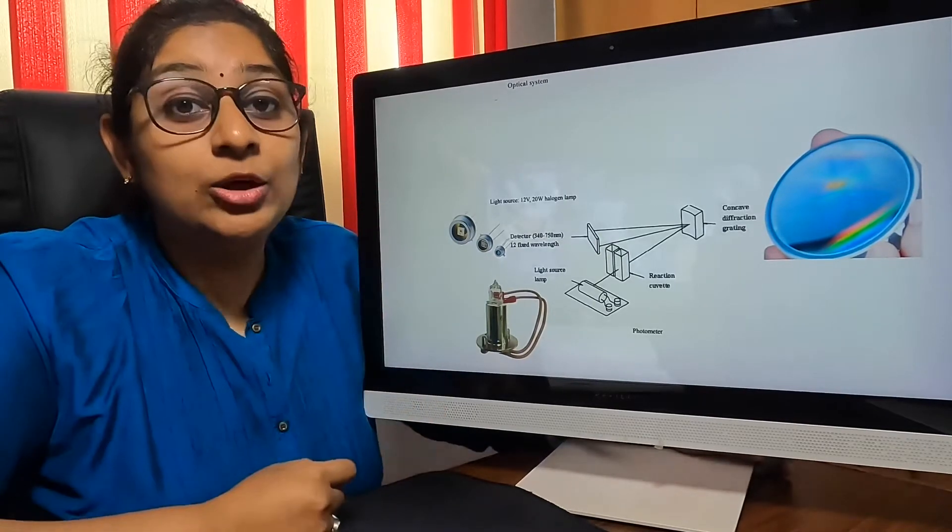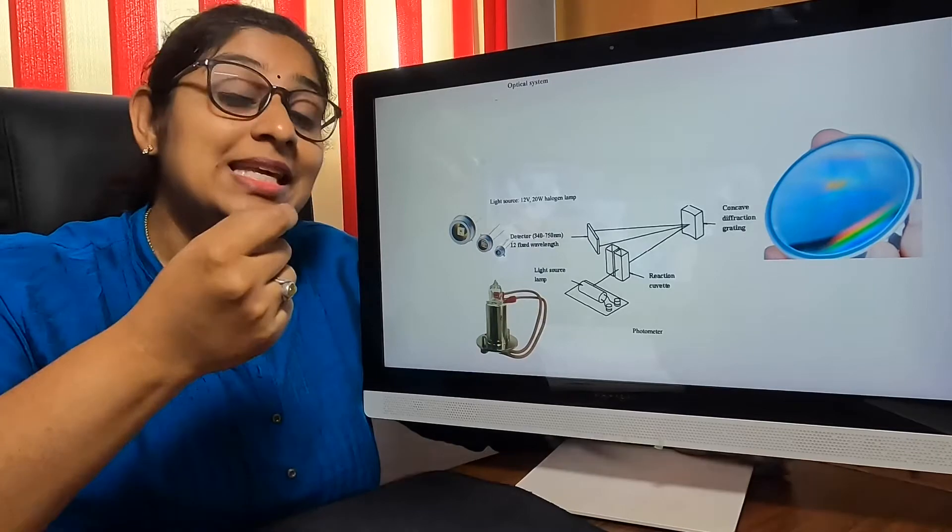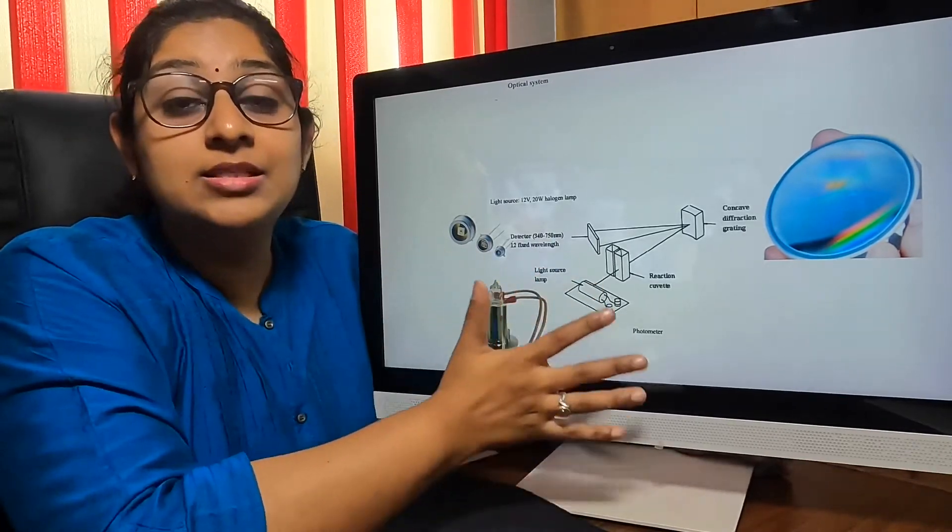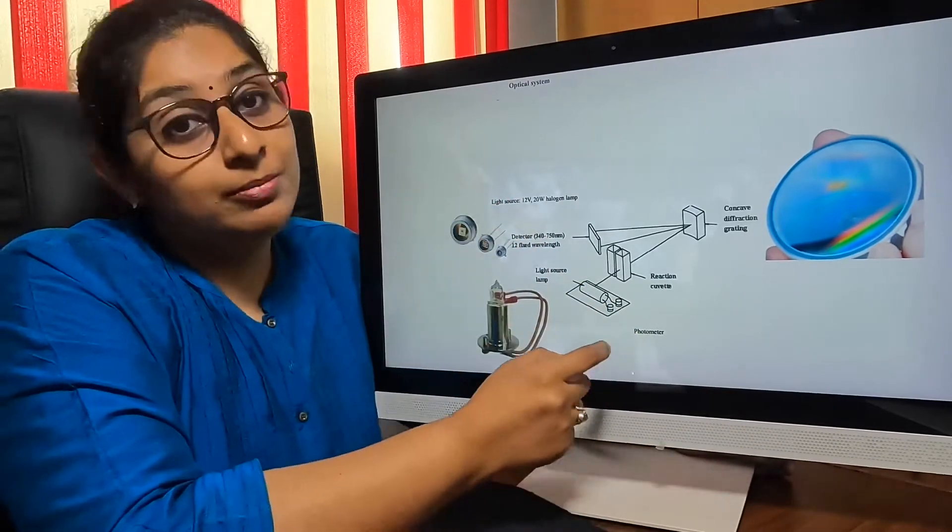And from there, logarithmically, the value is calculated through a series of calculations and other algorithms. This is the basic system of how this optical system in the Durabi machine works.